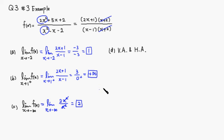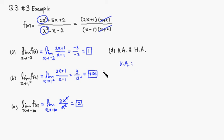Part a indicates that x equals negative 2 is not a vertical asymptote, because the limit there does not give you positive infinity or negative infinity. But part b, since the limit of this function as x approaches 1 from the right gives positive infinity, that makes x equals 1 a vertical asymptote. So there is only one vertical asymptote, and it is x equals 1.